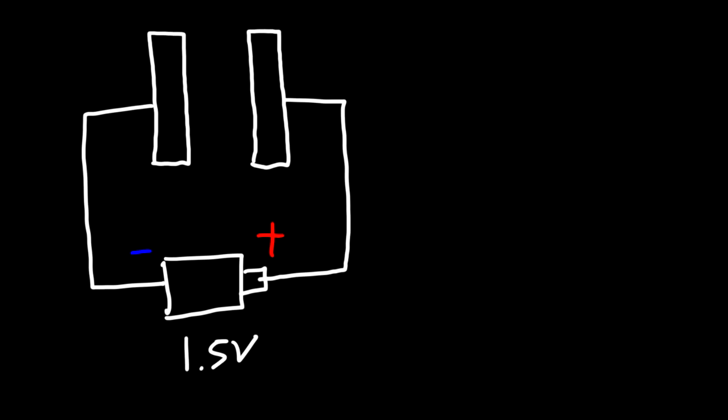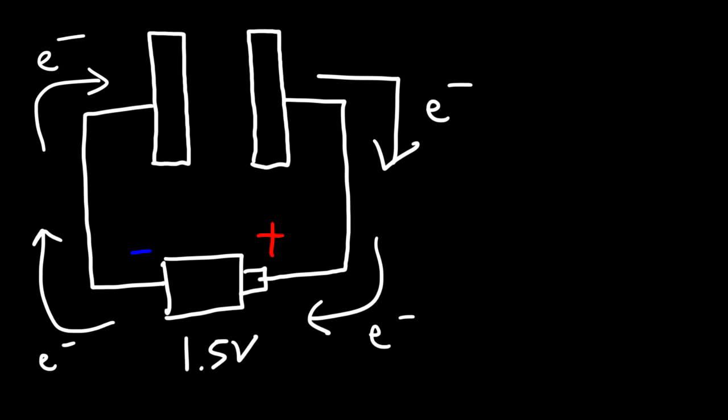What's going to happen is the battery is going to cause electrons to flow from one side of the capacitor to the other side. So electrons in the right metal plate will be transferred through the circuit to the left metal plate.